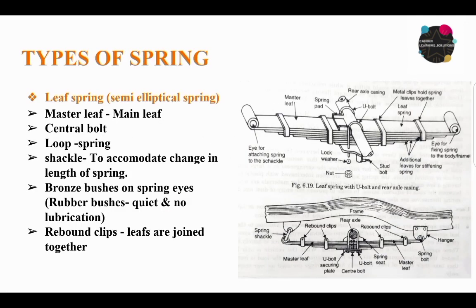Types of spring: the first type is a leaf spring. The leaf spring is a semi-elliptical spring. The longest leaf is called the master leaf. The master leaf has two eyes at its ends.